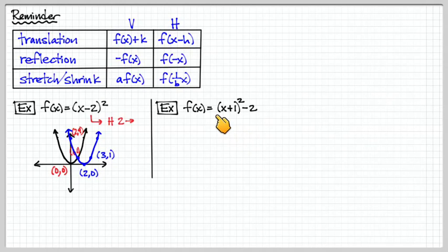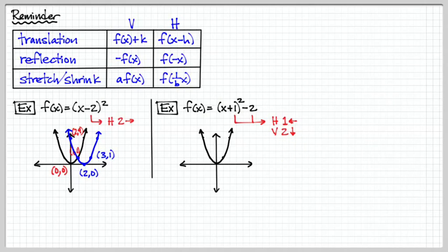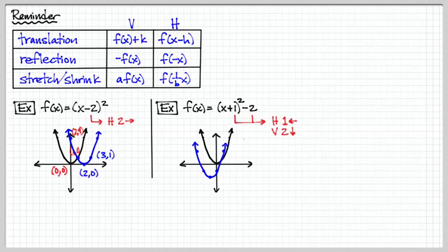In this case we have a slightly more complicated case where we have two translations going on. We see this inside part which is going to be our horizontal translation, this time to the left. And we also have on top of it this piece that's going to tell us we have a vertical translation downward. So starting with our parent function, our vertex went from (0,0) to the left by 1 and down by 2. From the vertex, since we're not stretching it, we go across 1, up 1, across 2, up 4 — and we now have the shape of this new parabola.